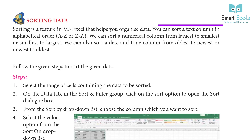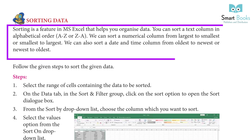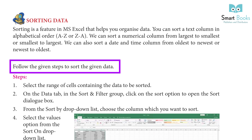Sorting Data: Sorting is a feature in MS Excel that helps you organize data. You can sort a text column in alphabetical order, A to Z or Z to A. We can sort a numerical column from largest to smallest or smallest to largest. We can also sort a date and time column from oldest to newest or newest to oldest. Follow the given steps to sort the given data.